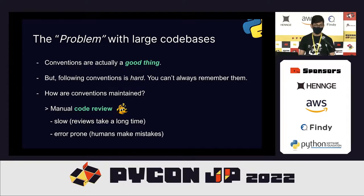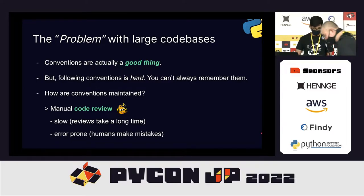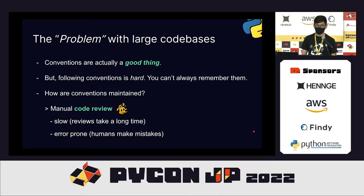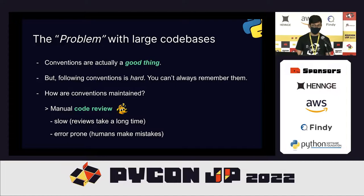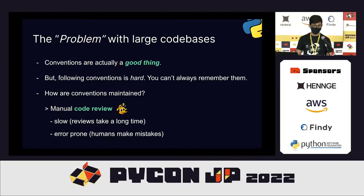The problem is not that the conventions are bad — conventions are actually a good thing. But following the conventions is very hard because you can't always remember what the convention is for a large codebase. Currently, these conventions are maintained using manual code review, where the project maintainer, team leader, or reviewer looks at your code and makes sure all the conventions are followed. But that doesn't really work. Code reviews are slow, they take a long time, and they're error-prone because humans make mistakes. Once a convention is broken, it becomes confusing for everyone.